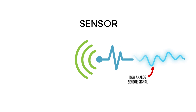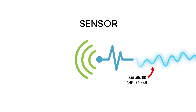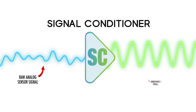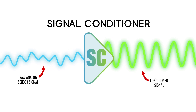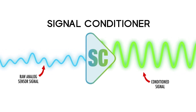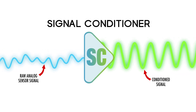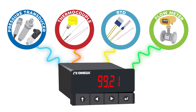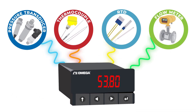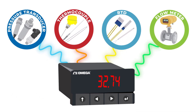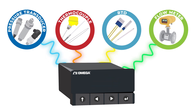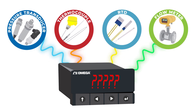A signal conditioner takes an analog signal from a process sensor and converts it into a signal that is compatible with process monitoring and control devices. It's one of the most important components to any sensing system. Given the variance in signal strength and signal types from one analog sensor to another, without optimizing these signals you cannot rely on the accuracy of your sensor's measurements.